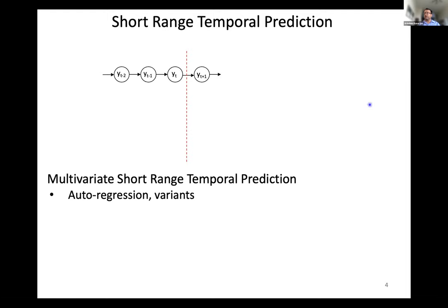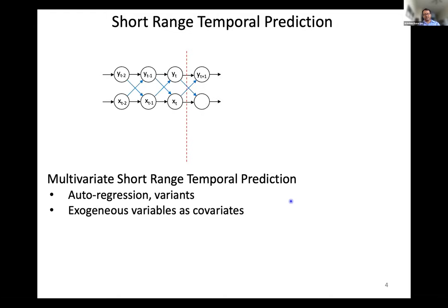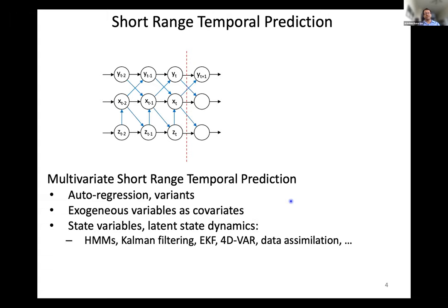Let's start with a quick review of short-range temporal prediction. You have data up to some point T and you are trying to predict the response Y at T plus one. The classical approach is an autoregressive model or variations thereof. The next step involves exogenous variables or covariates — the response Y impacts the Xs in the next time step, and so on with some suitable dependency structure. The most popular form involves state variables or latent state dynamics — common examples being hidden Markov models, Kalman filters, ensemble Kalman filters, and many variations of data assimilation. You try to capture latent state dynamics that have an impact on what you're observing.